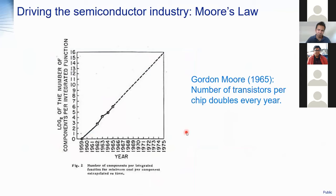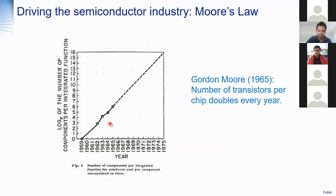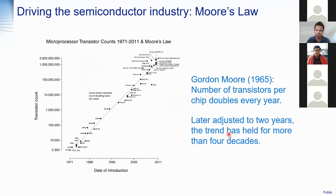Coming to Moore's law. In 1965, Gordon Moore — then R&D director at Fairchild Semiconductor — was asked to write a paper for Electronics magazine. He predicted that the number of components per integrated circuit would double every year. Essentially, the number of transistors — the building block of any microchip — had to double every year. This law was later adjusted to every two years, and that trend continued for more than four to five decades.